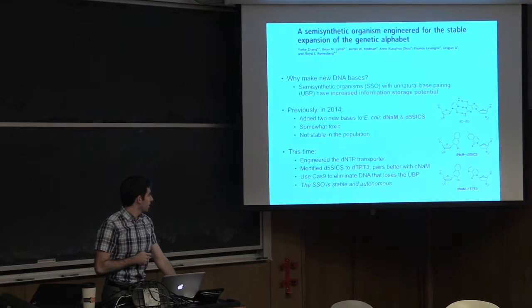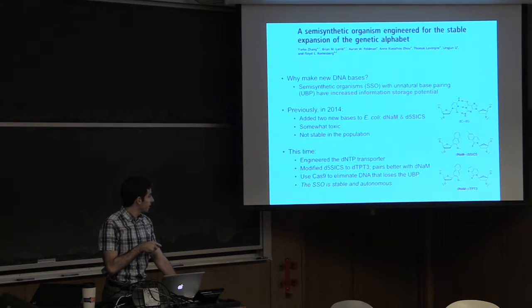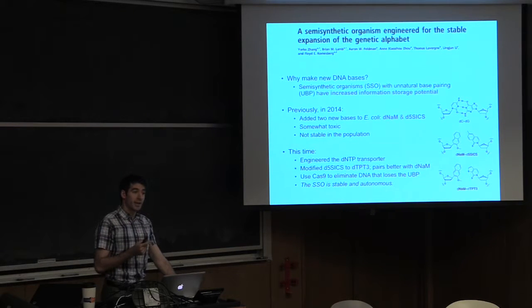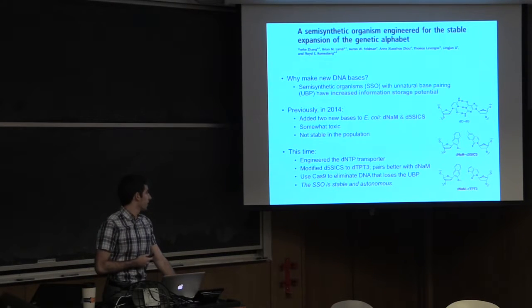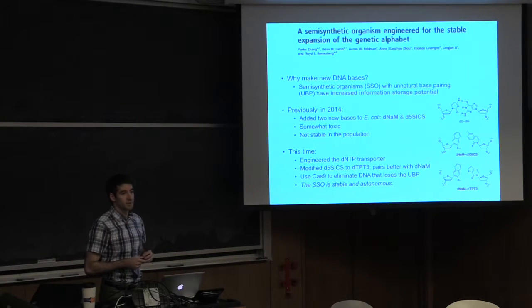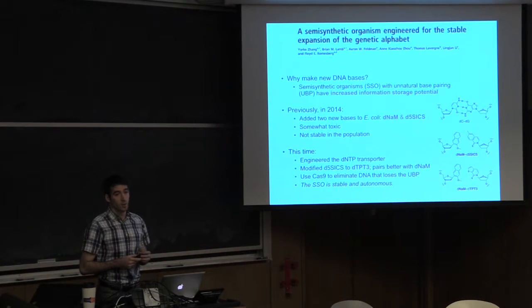So this time around, they made a few modifications. They changed one of the unnatural base pairs to this one, this pairs better. They used Cas9 to eliminate any DNA that doesn't maintain this, so it's basically selecting for the population as a whole to maintain its base pairing. And they claim that it is a stable and autonomous semi-synthetic organism.